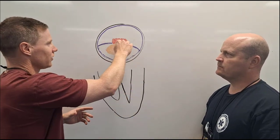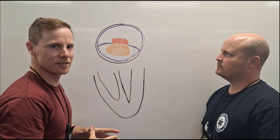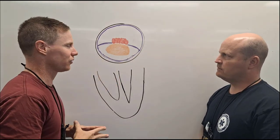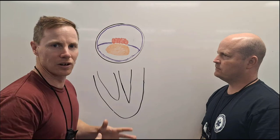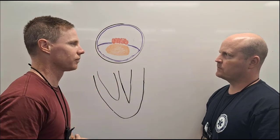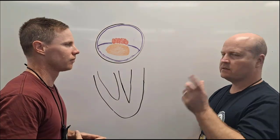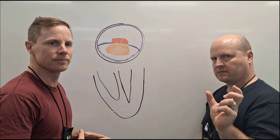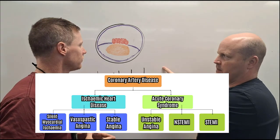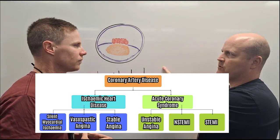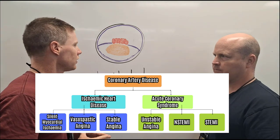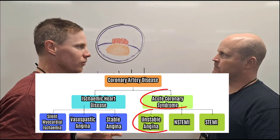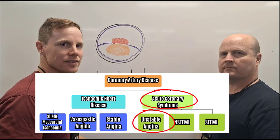We've still got the clot, we've still got the decrease in the lumen, and we've still got a lack of blood flowing through. Ischemic heart disease was where stable angina sat — where does this sit in the spectrum of coronary artery disease? This falls under acute coronary syndrome, or ACS.